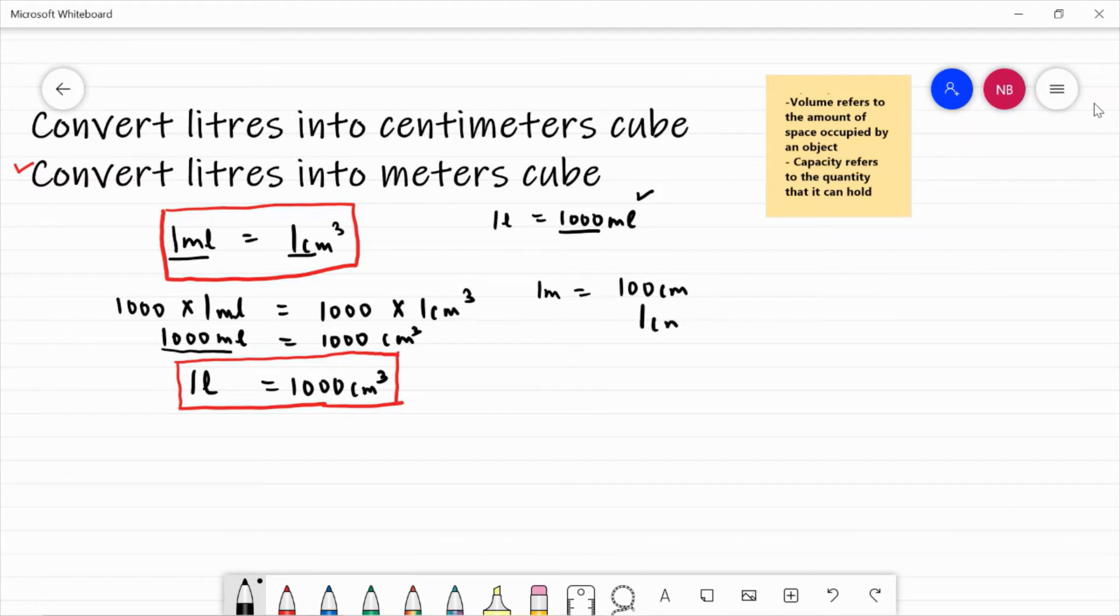so one centimetre is equal to how many metres? Yes, it will be one upon hundred metres. What will I do?